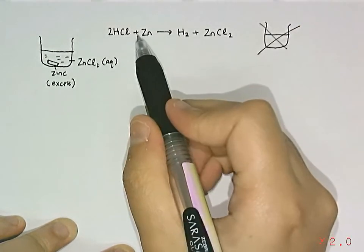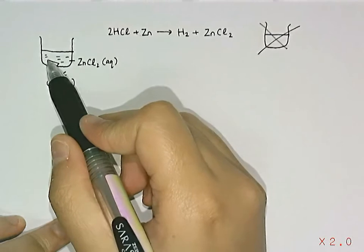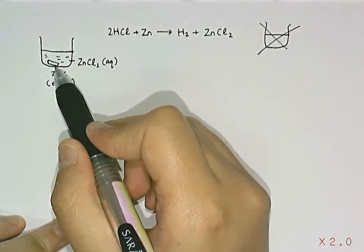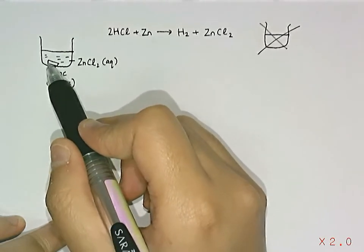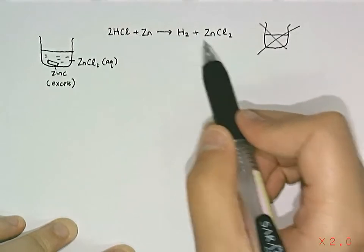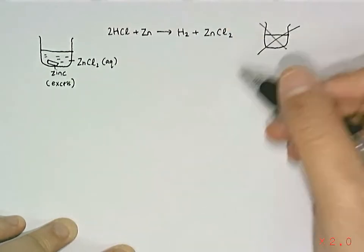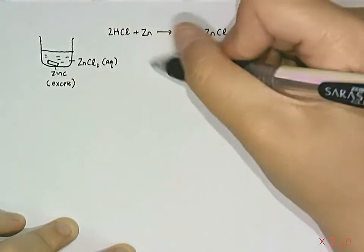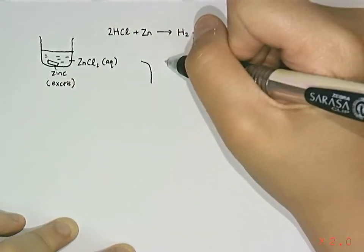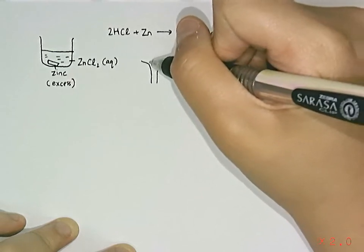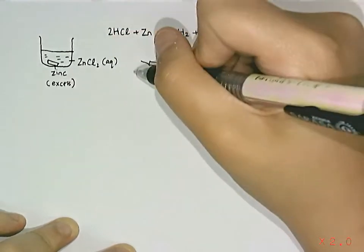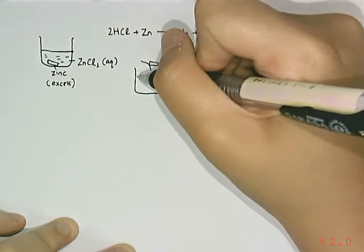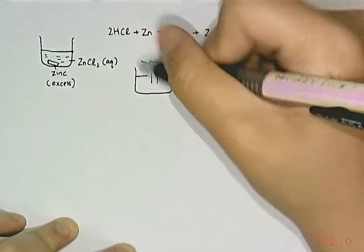If I use excess zinc, I will be left over with solid zinc and the final product zinc chloride. How I am going to get zinc chloride is that I will filter. Zinc will be my residue and my filtrate is going to be zinc chloride.